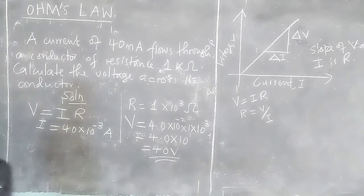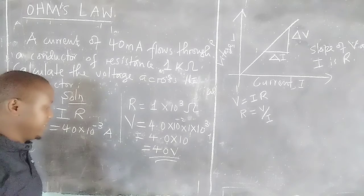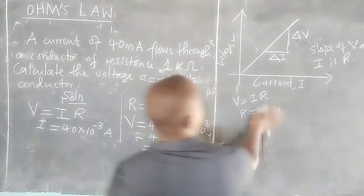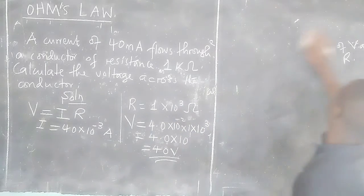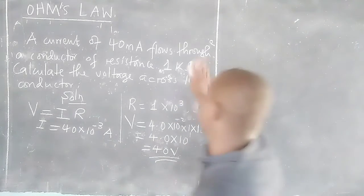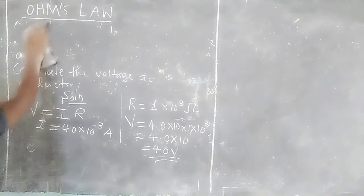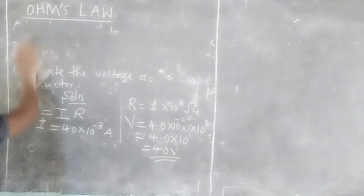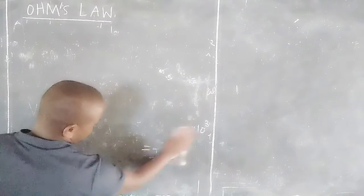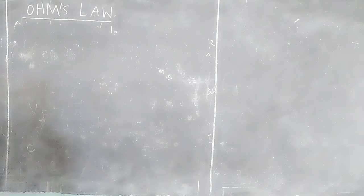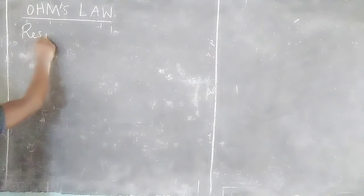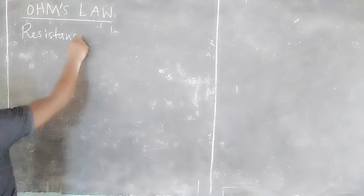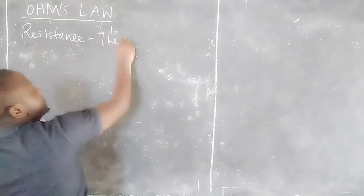This becomes 4.0 times 10 to the power 1, or simply 40 volts. So the voltage across this resistance will be 40 volts.